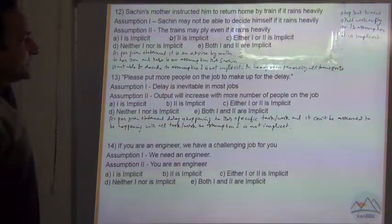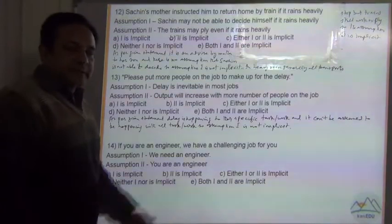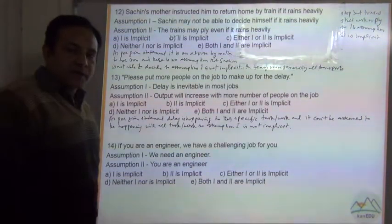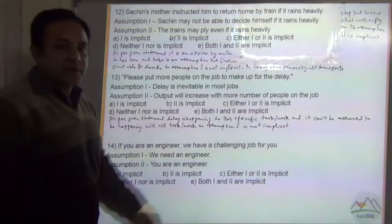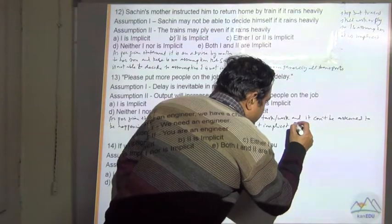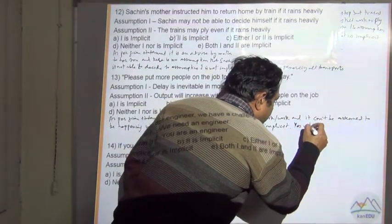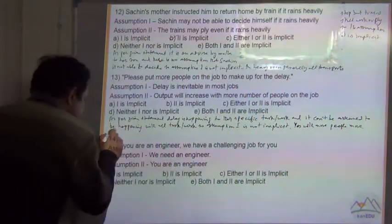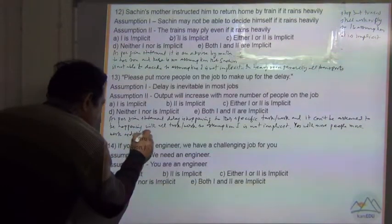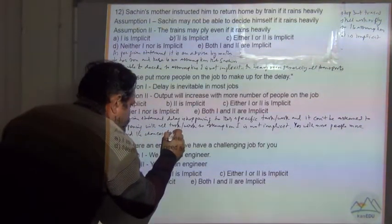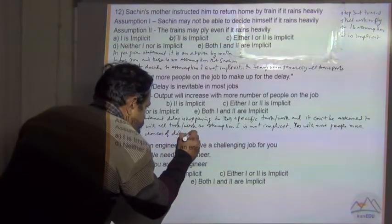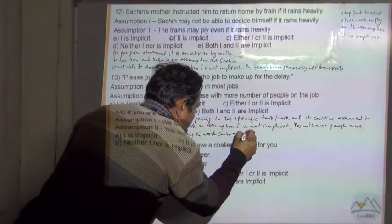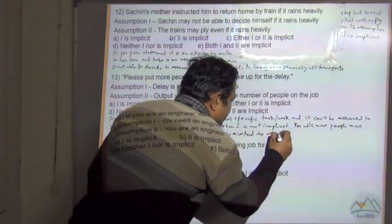Assumption 2: output will increase with more number of people on the job. Yes, because putting more people will make the work go faster and the delay can be avoided. Yes, with more people, more work and the chances of delaying the work can be avoided. So assumption 2 is implicit.